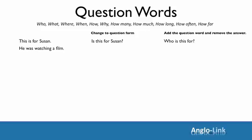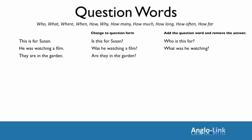'He was watching a film.' Let's ask a question with 'what.' Change to question form, add 'what,' and remove 'a film.' What was he watching? 'They're in the garden.' Let's ask a question with 'where.' Are they in the garden? And then add 'where,' removing 'in the garden.' Where are they?